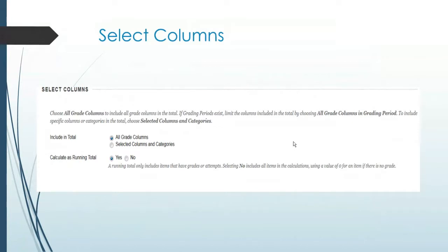A little bit further down it says Select Columns. Let's say you do 10 things in the class, and all of a sudden you decide you're not going to use one towards a grade — the students weren't prepared, the scores weren't great, so you toss it. You can actually select columns and categories or select all. If you've decided you want these 10 things but changed your mind, you can do it either way. Personally, everything I have listed has a grade — it makes it easier, it's a total of everything in the grade book.